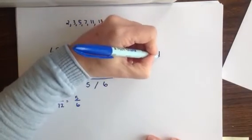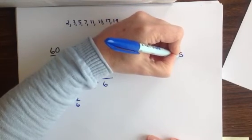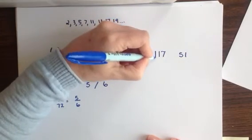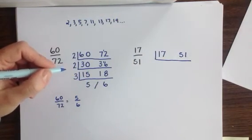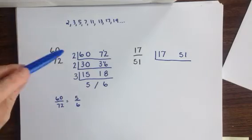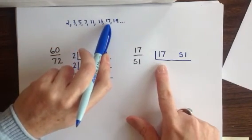Our final example gives us the numbers 17 and 51. This is a problem I see students missing most often on exams. Because if you look at our list of primes, you'll notice that 17 is on that list of primes.